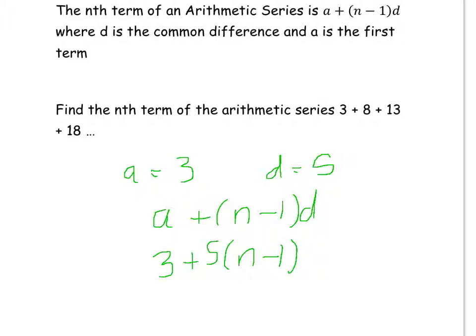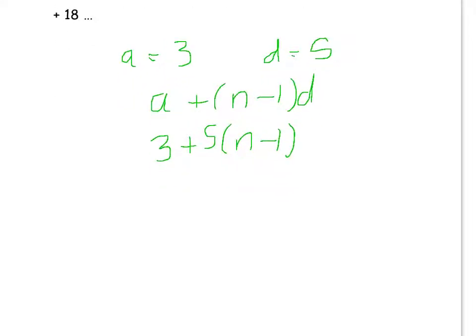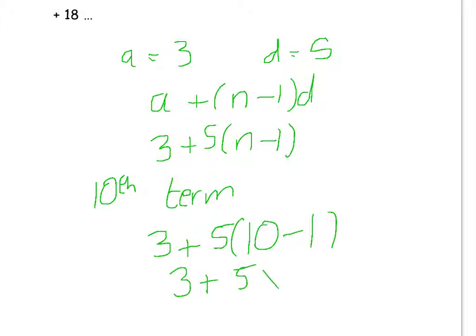Now if I want to find the 10th term in this sequence, all I have to do is substitute in 10 for N. So 3 plus 5 times 10 minus 1, so 3 plus 5 times 9, which is 45 plus 3, which is 48. So the 10th term in this sequence would be 48.